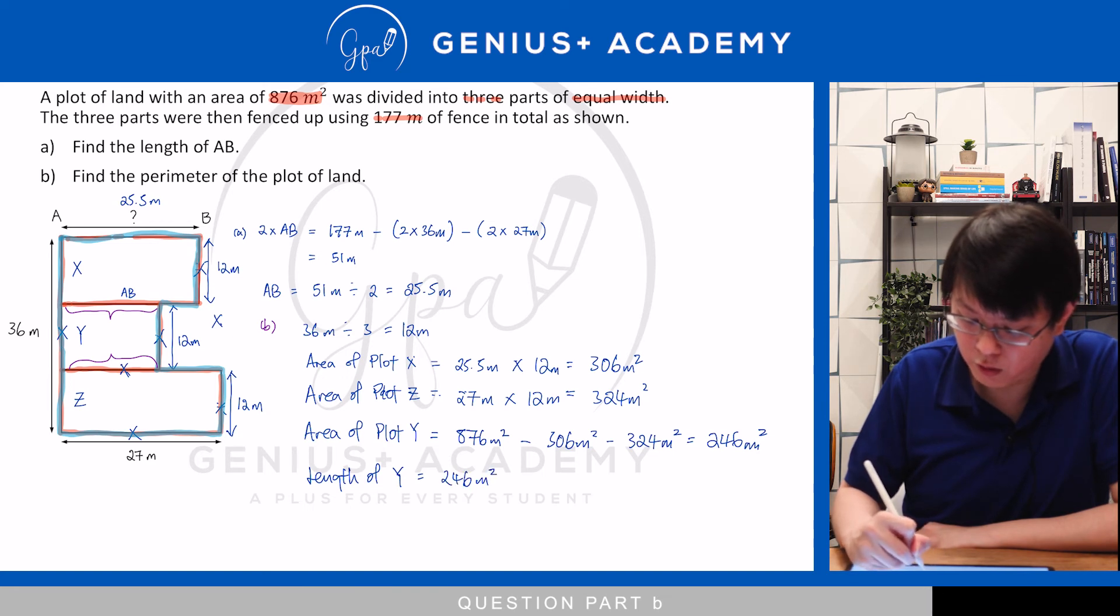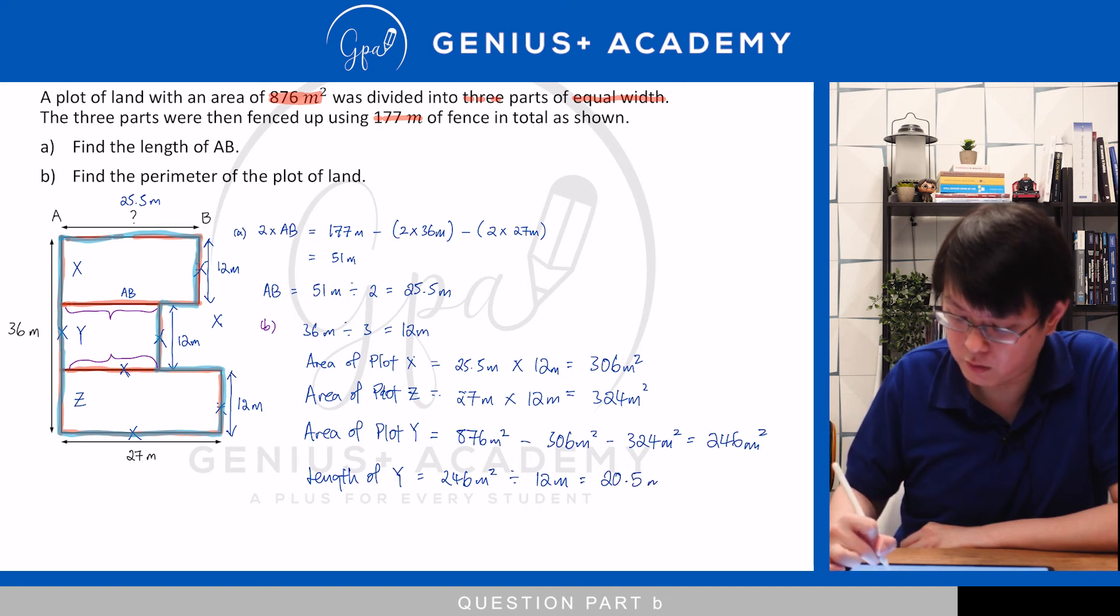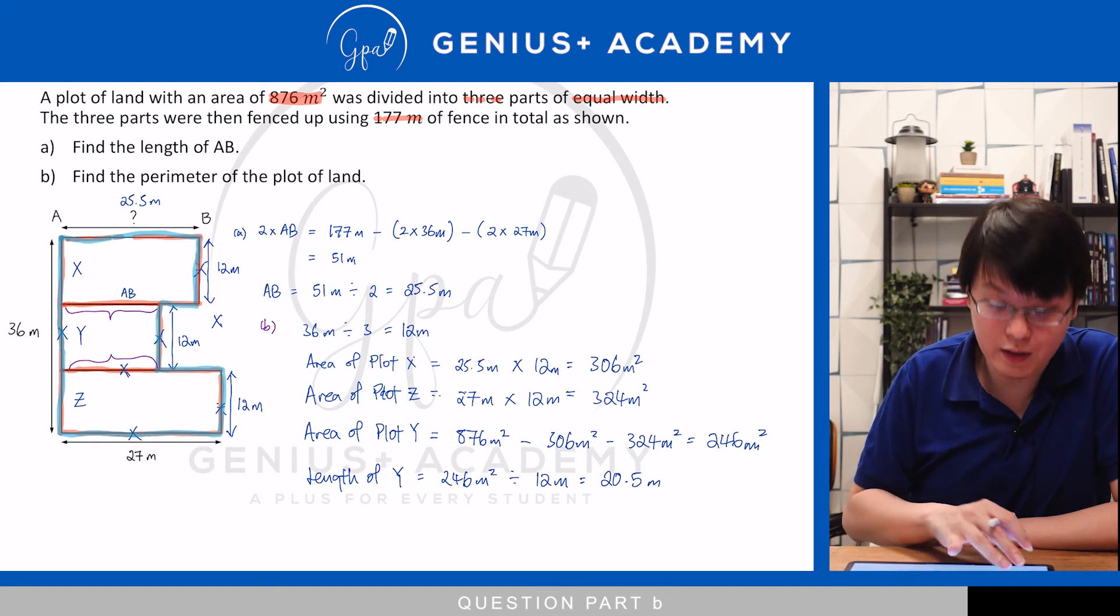So, 246 metres squared divided by the breadth, which is 12 metres, will give me the length. 20.5 metres. Go ahead and label it into your diagram.